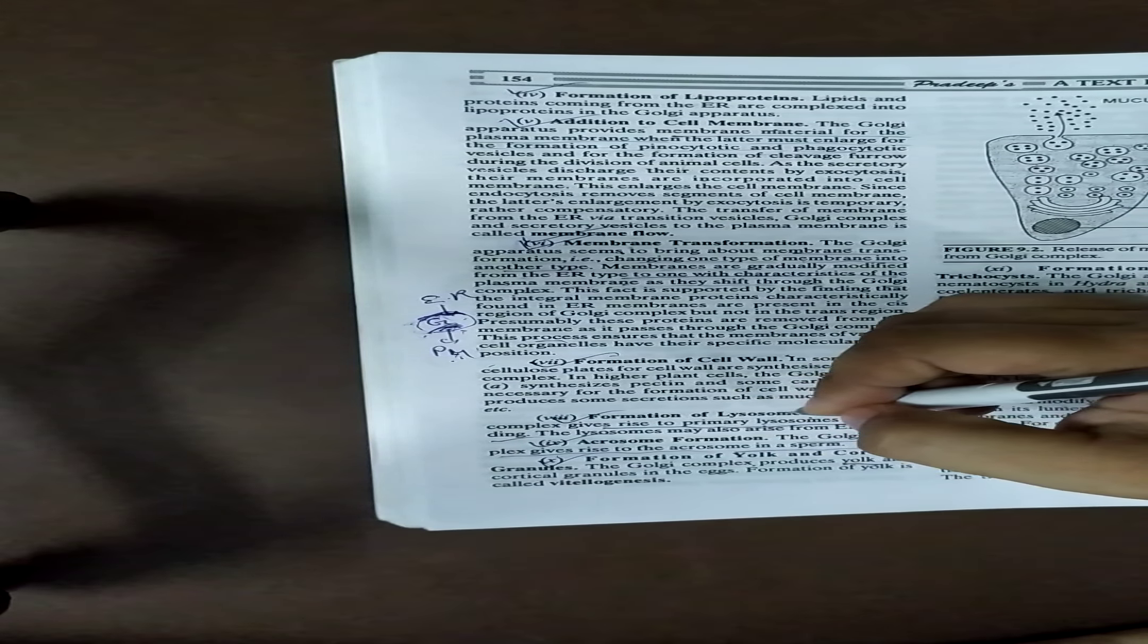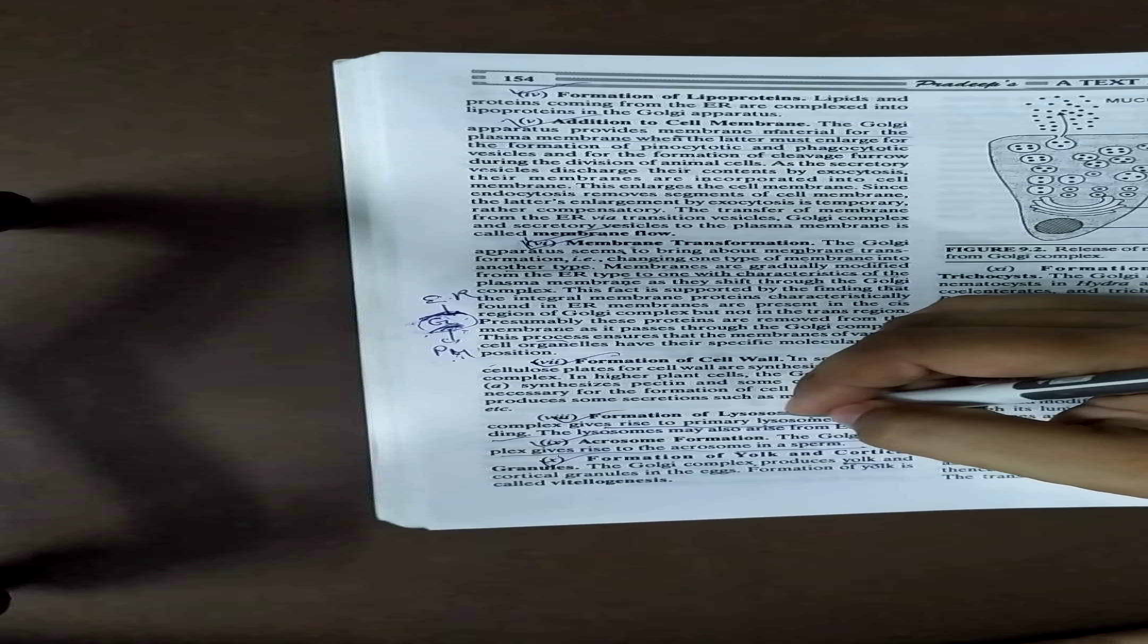The lysosomes are simple vesicles, but contain the number of digestive enzymes. So this is the formation of Golgi bodies.